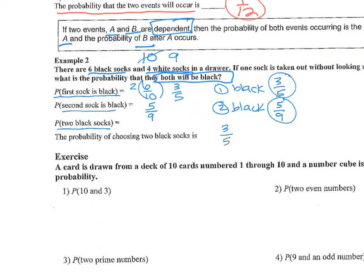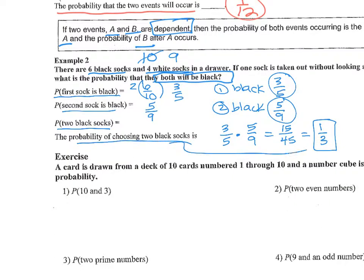Three over five times five over nine: five times three is fifteen, five times nine is forty-five, giving us fifteen over forty-five. That reduces to one third — three goes into fifteen and forty-five. So the probability of choosing two black socks is one third. That's what dependent means: the second fraction depends on what happened first, so both total socks and black socks decreased.